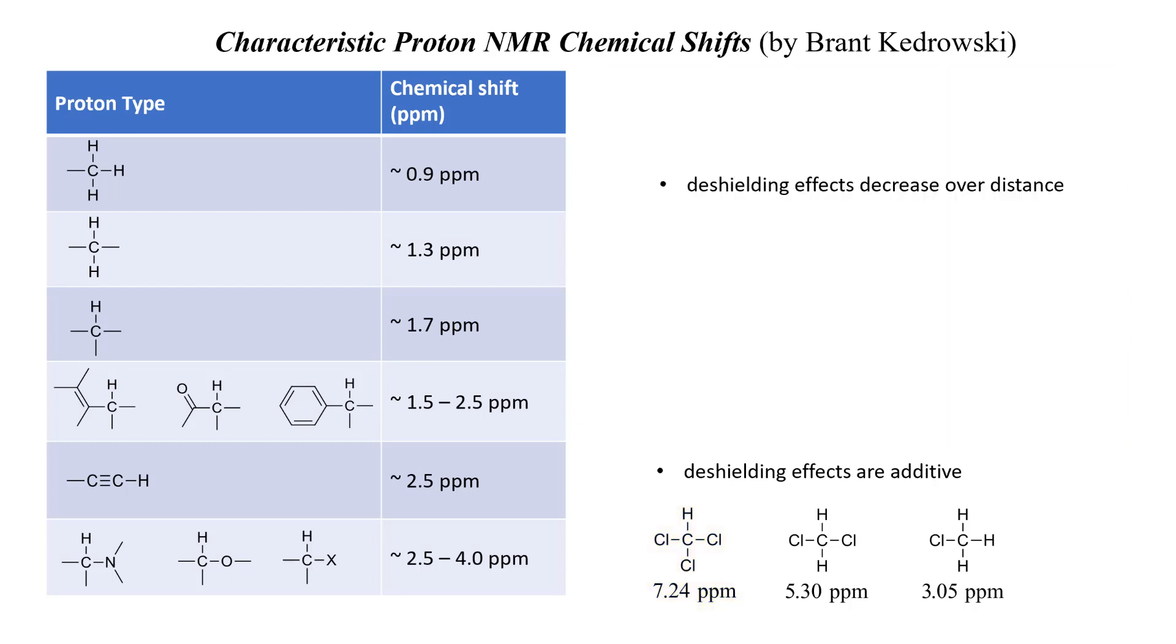The next point about chemical shift I want to make is that deshielding effects decrease over distance. For example, in the following molecule, we have a chlorine attached to an alkyl group. In the first CH2 of the alkyl group, the protons show up at 3.5 parts per million. They feel the effect of the chlorine very strongly. The next CH2 group is further away from the chlorine and feels the effect of it less strongly, showing up at a chemical shift of 1.8 parts per million. Moving further away from the chlorine, the chemical shift of the following CH2 is 1.3 parts per million, which basically is the same as an ordinary CH2 group. The chlorine has minimal effect at this point, and further away from the chlorine, there's even less effect.